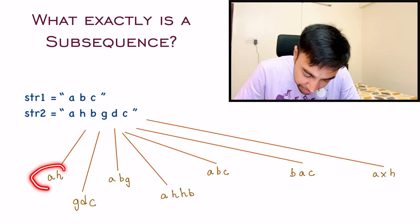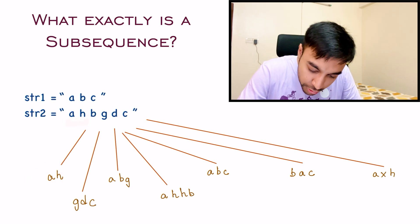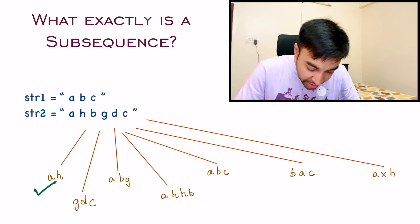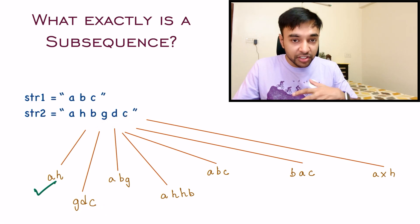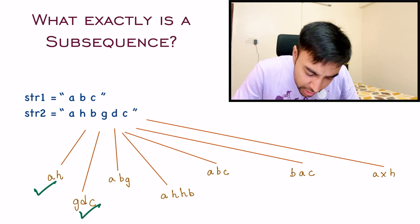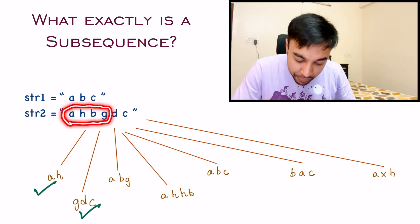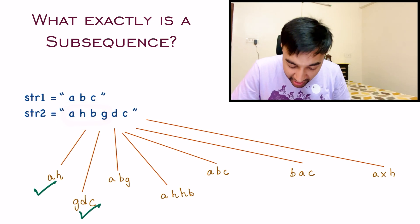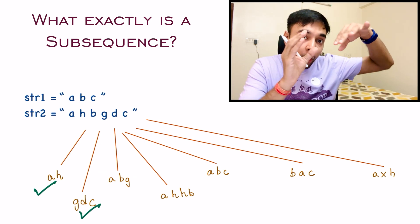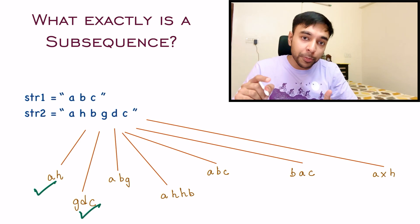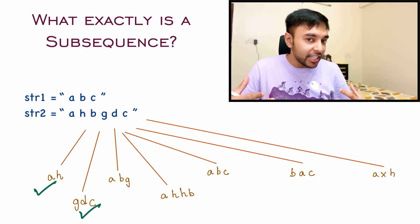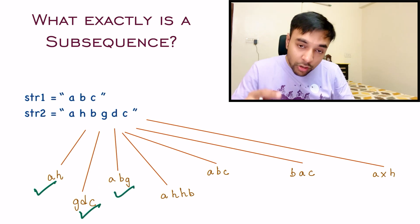Starting with the first string 'AH' — you can find AH in the original string, so yes, this is a valid subsequence. Moving on to 'GDC' — GDC is present in the original string, so this is also a valid subsequence. Moving on to 'ABG' — you cannot find ABG contiguously, but for a valid subsequence the characters do not have to be contiguous. A appears, then B, then G, in the same order, so this condition is satisfied and ABG is also a valid subsequence.